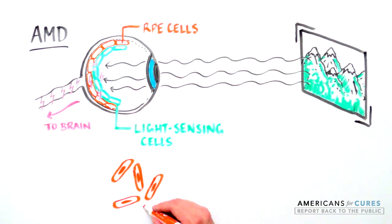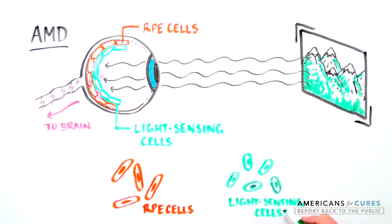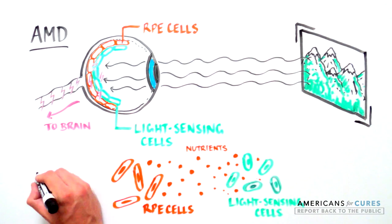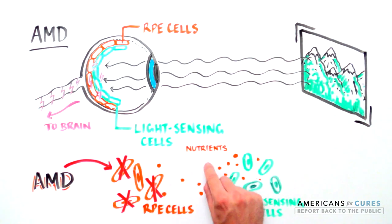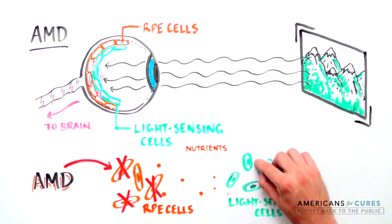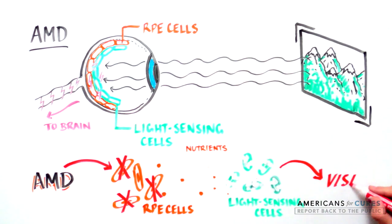However, in order to function, these light-sensing cells require support and nutrients from cells that keep the back of the eye healthy, called retinal pigment epithelial cells. However, in AMD, these supportive RPE cells start to die, so that the eye no longer has the nutrients and support necessary to maintain good sight.